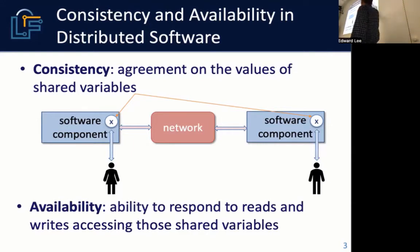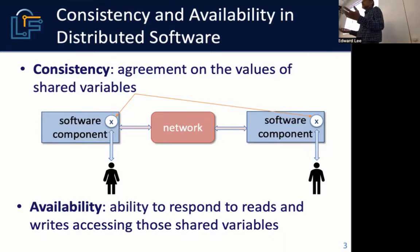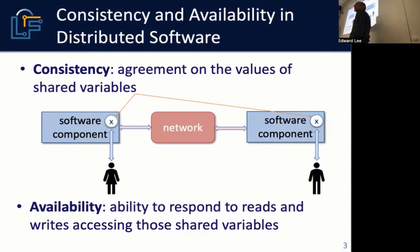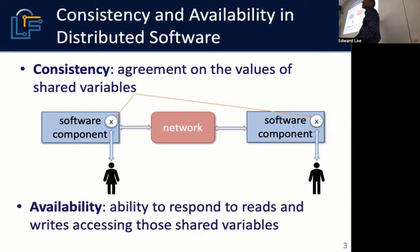Availability is simply the ability to respond to reads and writes that access shared variables. A typical application people talk about is a distributed banking system with ATM machines that dispense cash. You want them to remain available so people can get cash even if you lose network connectivity. But there's risk: if you have two simultaneous withdrawals occurring in geographically distinct places, the balance on the bank account could go negative, because each component doesn't know instantaneously about the other withdrawals happening.